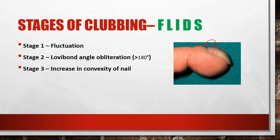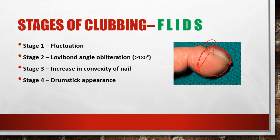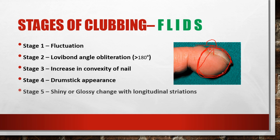Stage three: there is increase in the convexity of the nail, so the nail becomes more convex as there is increase in the anterior-posterior diameter. Stage four means drumstick appearance — there is increase in nail pulp, so the nail pulp increases and it appears like a bulbous appearance, just like the bulbous end of a drumstick.